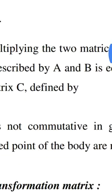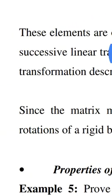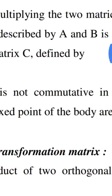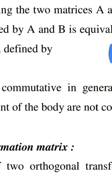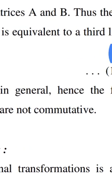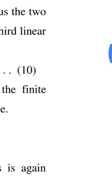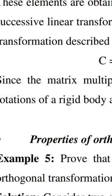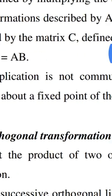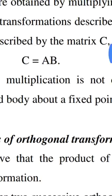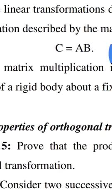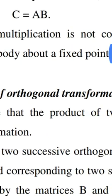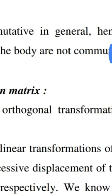Thus, the two successive linear transformations described by A and B are equivalent to a third linear transformation described by the matrix c = AB. Since matrix multiplication is not commutative, the two successive finite rotations of a rigid body about a fixed point are not commutative.